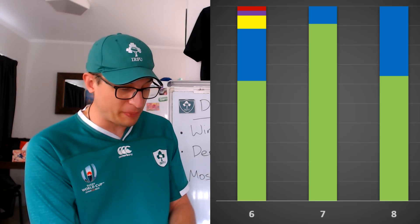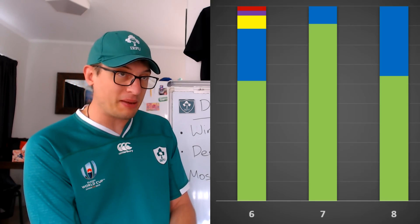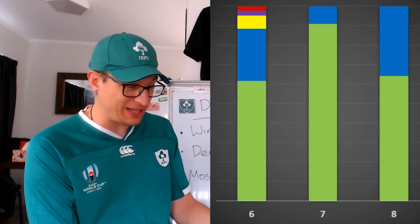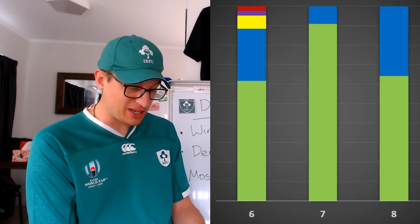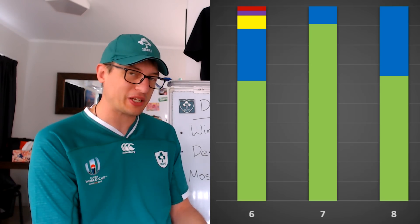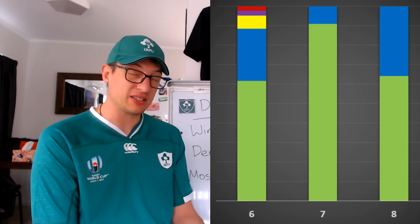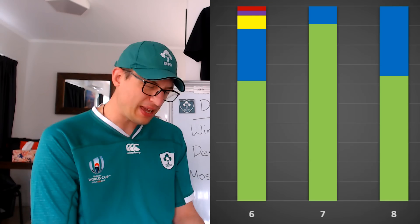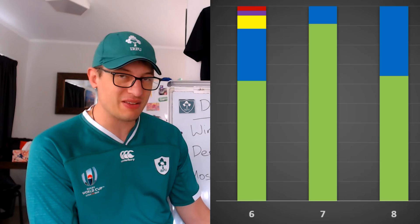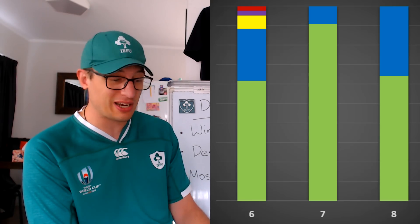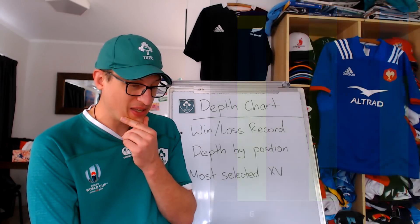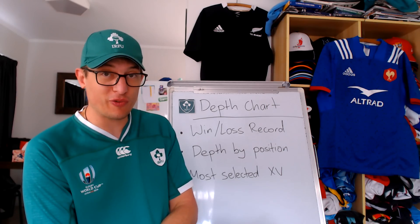At number six, Peter Armani is the leading man in green - he's gotten more game time with Doris shifting more to eight. Doris still features at six too, along with Conan, Byrne, and even a bit of Deegan. Guys like Rhys Ruddock and Will Connors have kind of fallen out of the picture for now. Doris's contact meters are always massive, Van der Flier with his tackles and tries, and Armani with his lineout work - he gets a bit underrated for how much he gets around the park.